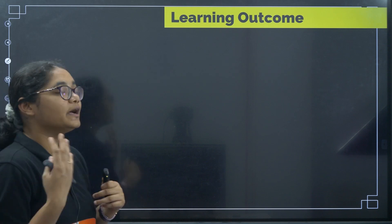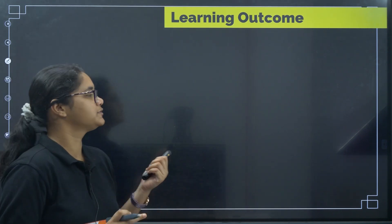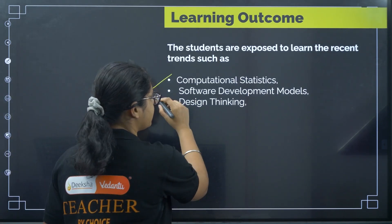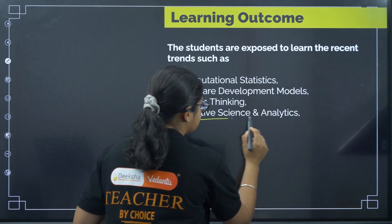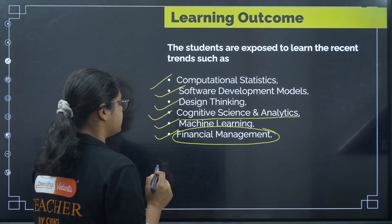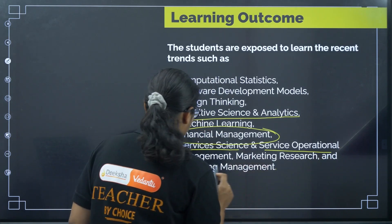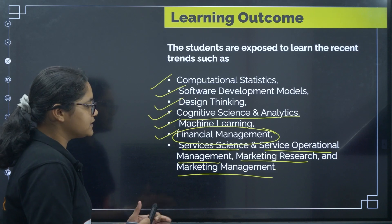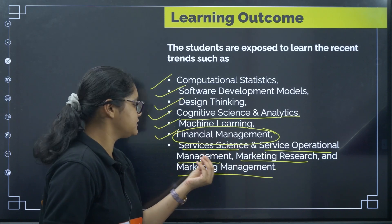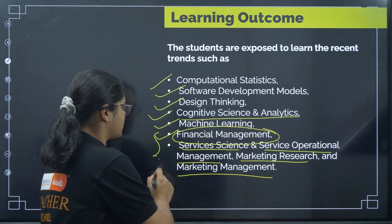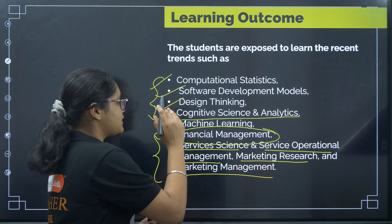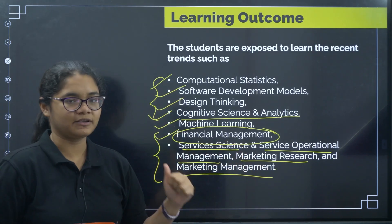Regarding learning outcomes after completing this course: you will be exposed to computer statistics, software development models, design thinking, cognitive science and analytics, machine learning, and financial management. You will also learn service science and service operational management, marketing research and marketing management. These business-oriented topics are specific to computer science in business system — if you take only computer science, you will not be learning about these things.